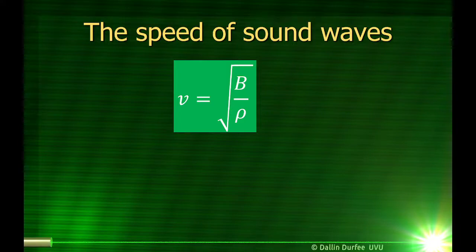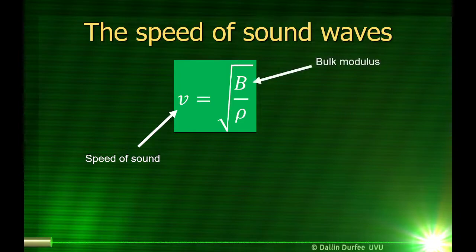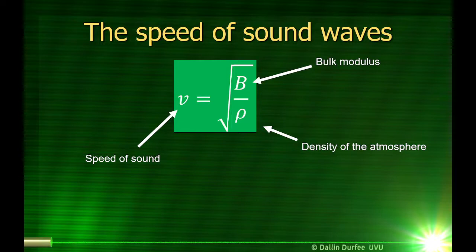That equation says the speed of sound is equal to the square root of the bulk modulus of the air divided by the density of the air. The density is just how much mass there is per unit volume, which depends on how many air molecules there are per cubic centimeter and how much each air molecule weighs. The bulk modulus tells us how hard it is to squish the gas — if I push on the gas, how hard does it push back?